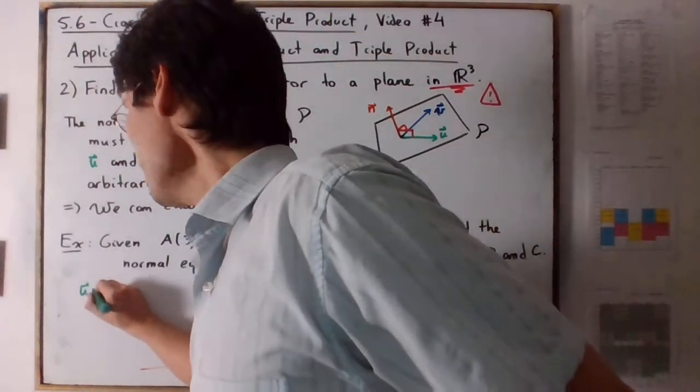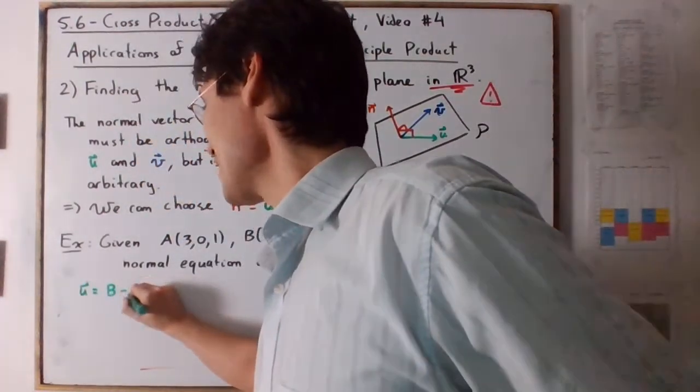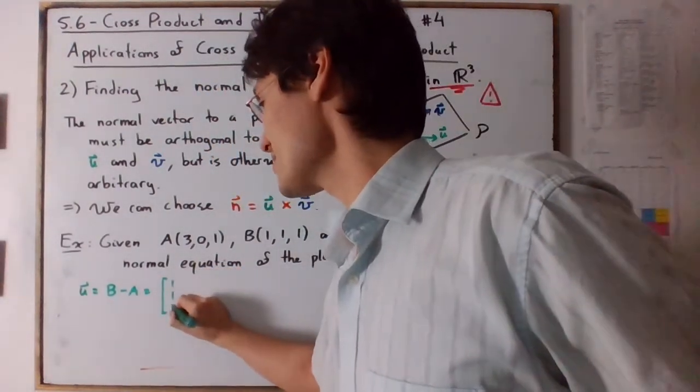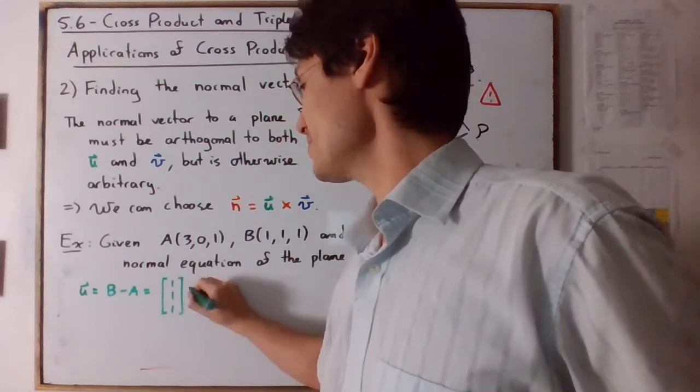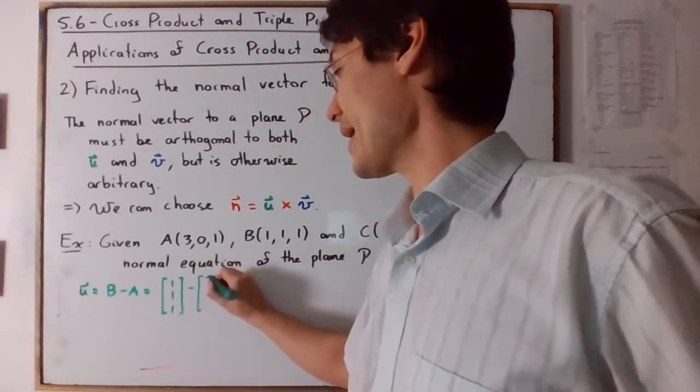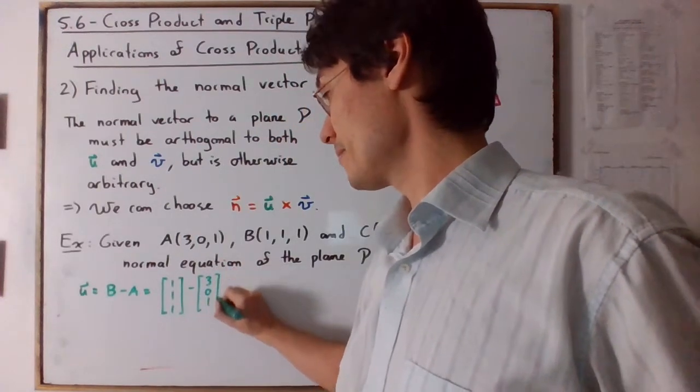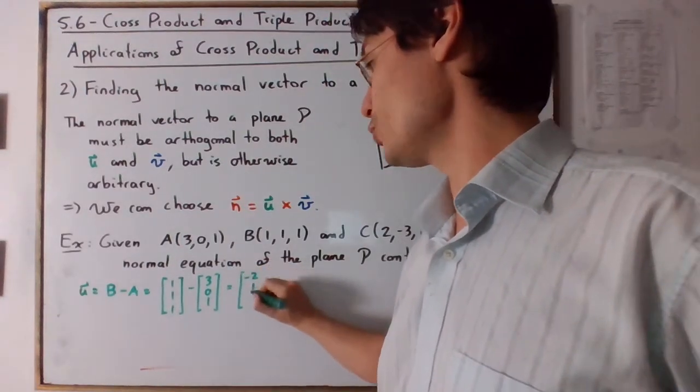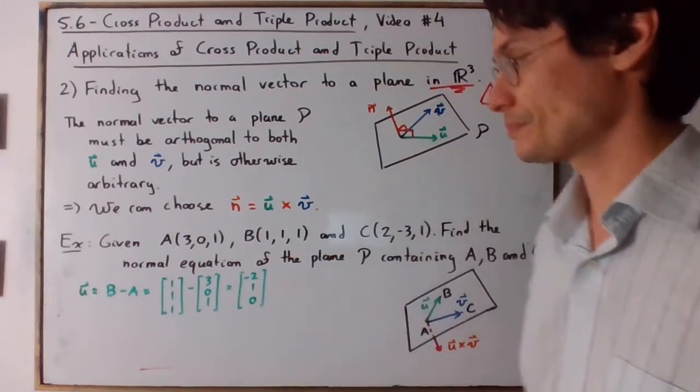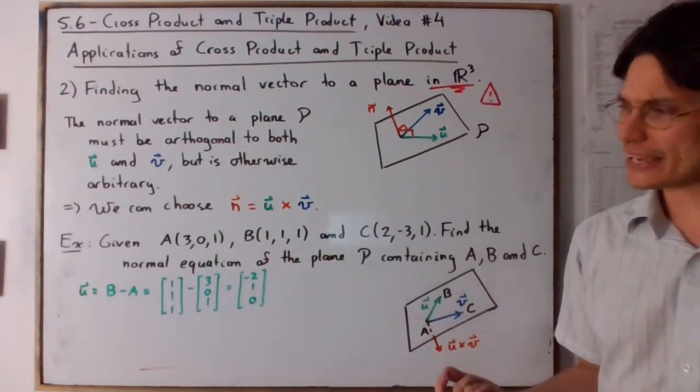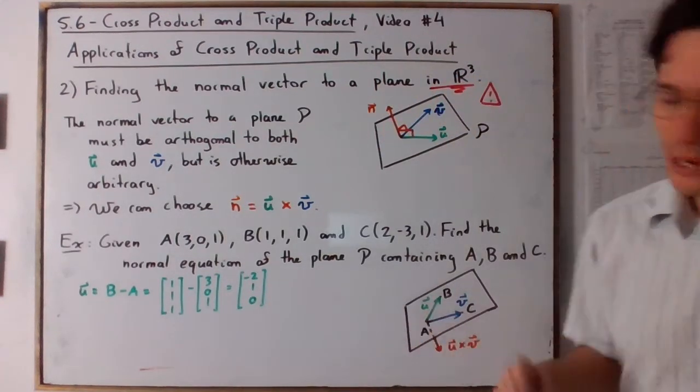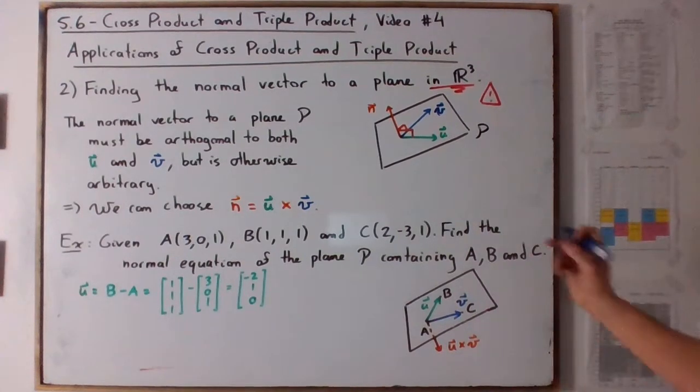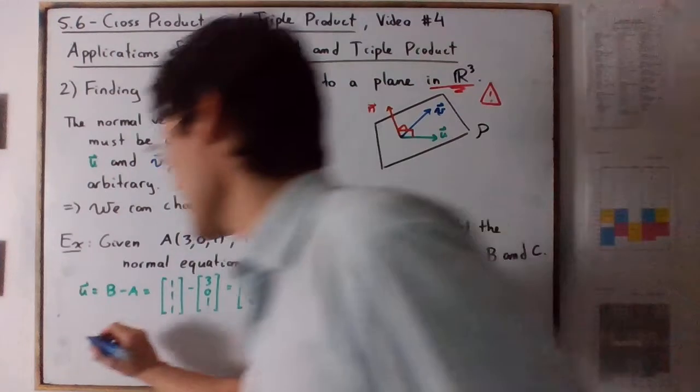We want to engineer the vectors u and v. So vector u will be B minus A. And I remember in the last video, like it was the same thing, I don't want to mess up, so I will actually write the vectors as they are. And as you can see, you will have negative 2, 1, and 0. I will just do this problem as if it was a standalone example.